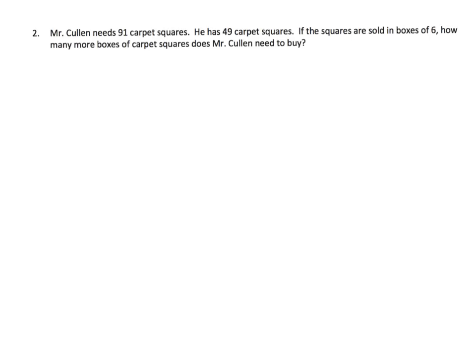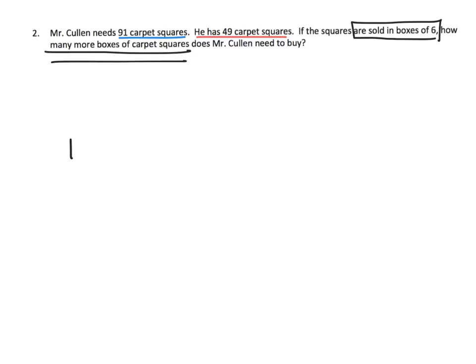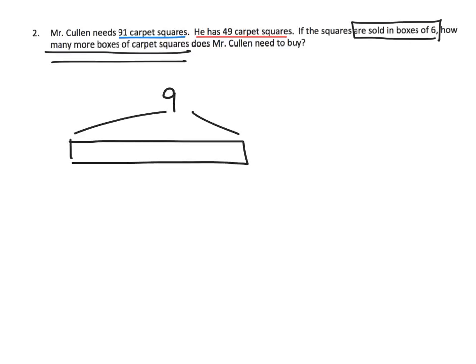Problem 2: Mr. Cullen needs 91 carpet squares and currently has 49. If the squares are sold in boxes of six, how many more boxes does Mr. Cullen need to buy? This sounds like a multi-step problem. I'll draw a single bar representing 91 total, and mark the portion he already has — 49 — on the left, leaving the unknown portion N on the right for what he still needs.